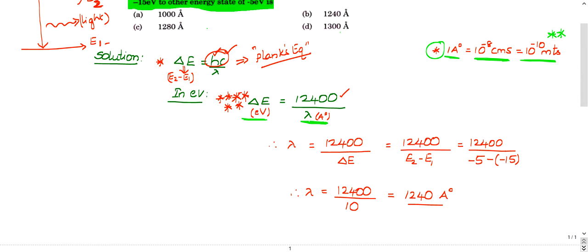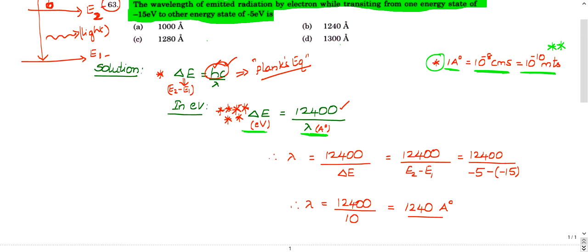Delta E is nothing but change in energy, which is nothing but 12,400 by wavelength. Now let us see this. Now he is asking lambda. He has given E1 and E2. E1 and E2 are given for us. So lambda is nothing but 12,400 by delta E. This is nothing but 12,400 by E2 minus E1. This is nothing new. Same simple question.